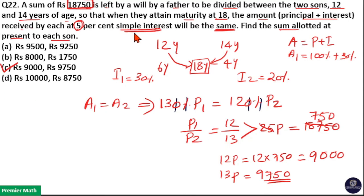Here, this is simple interest. That is why interest is equal to 6 into 5, 30 percentage and 4 into 5, 20 percentage because simple interest is same for every year.